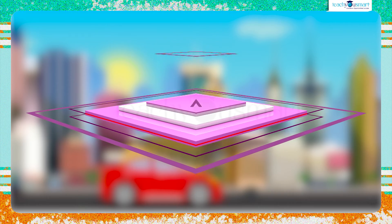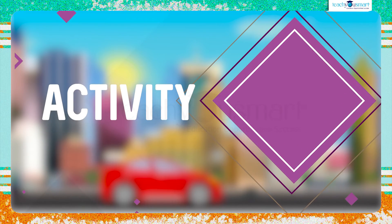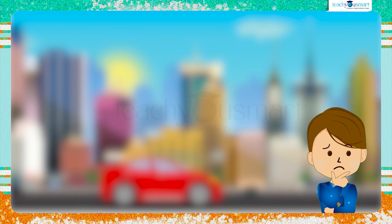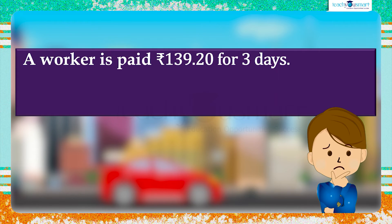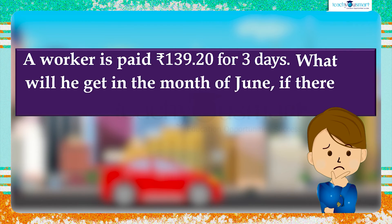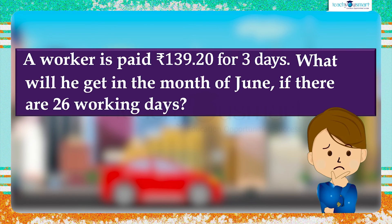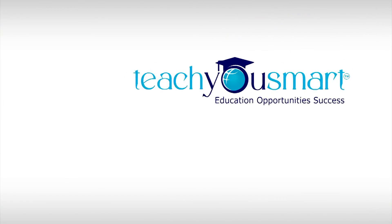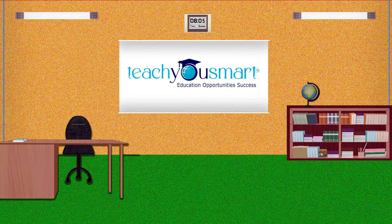Before winding up, let's check how much you understood by doing an activity. A worker is paid 139.20 rupees for 3 days. What will he get in the month of June, if there are 26 working days? That's all for now, see you all in the next class.